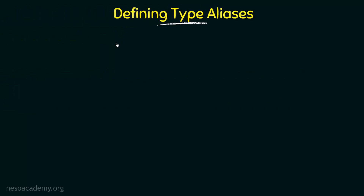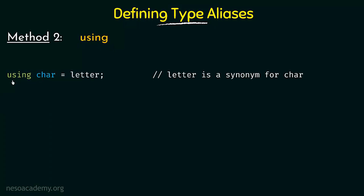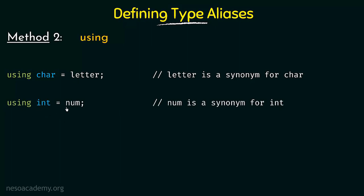The second method is by using the using keyword. Here we use the using keyword and assign it to the new name we need. So letter is a synonym for char — using char equal to letter means we are replacing the word char with letter. Similarly, using int equal to num means num is now a synonym for integer.